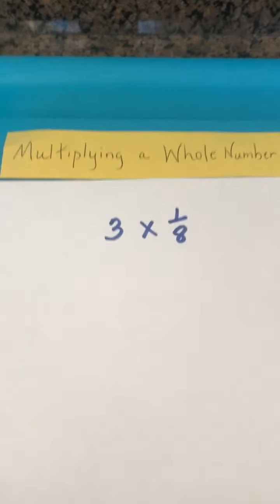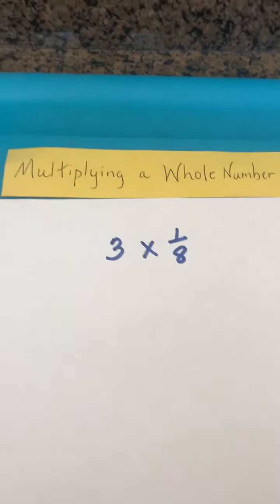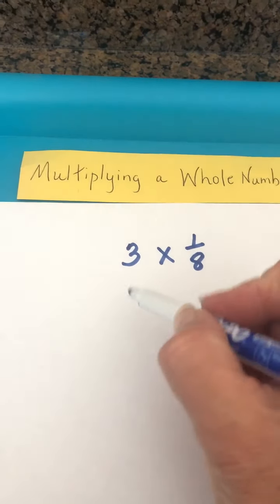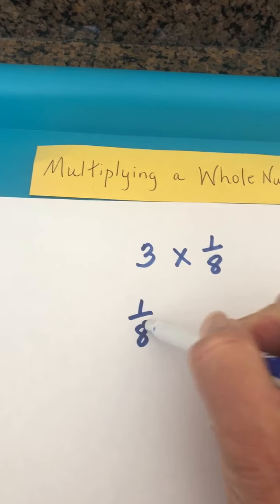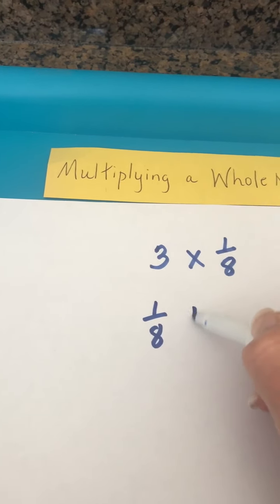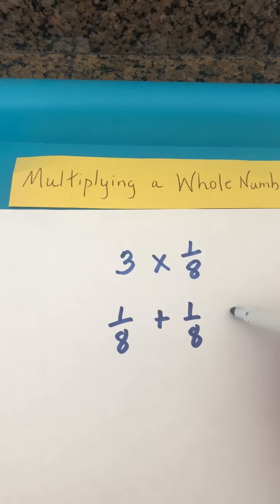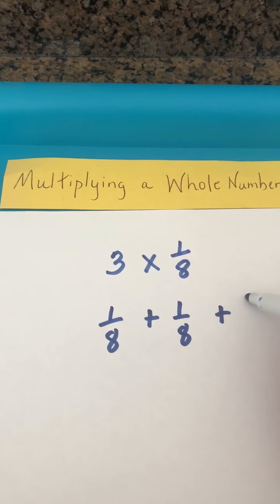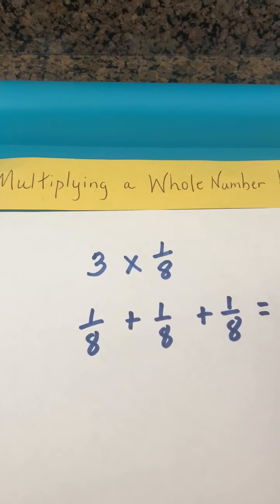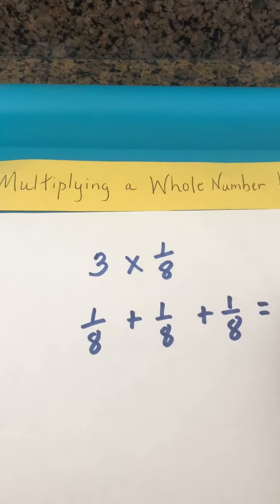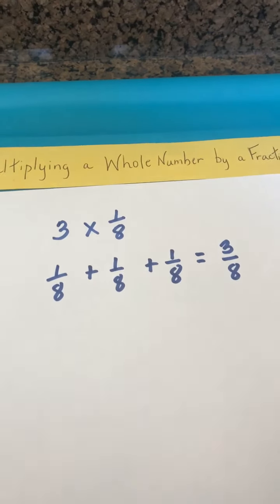Let's look at three groups of one-eighth, which basically would give us one-eighth plus one-eighth plus one-eighth, which is three-eighths.